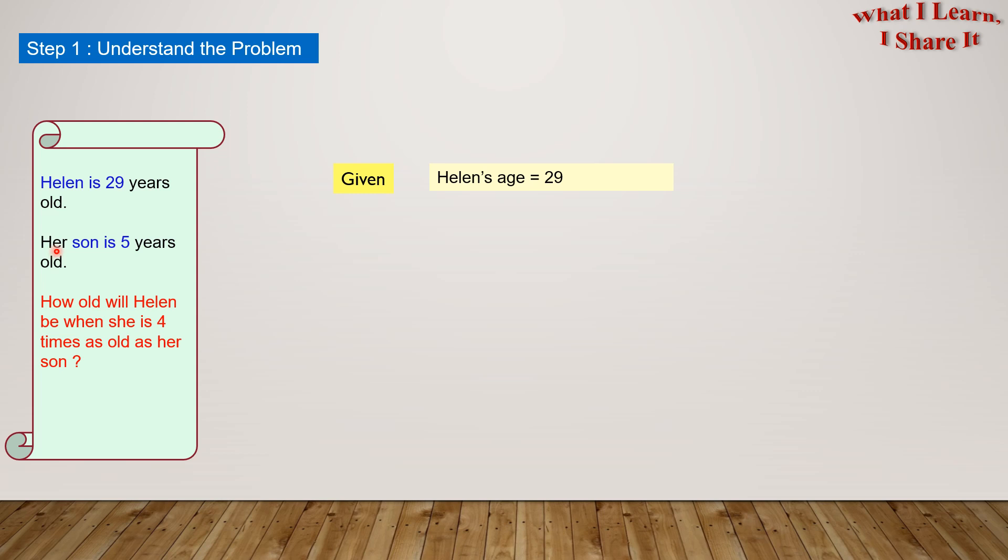We are also given that her son is 5 years old. So we could write in our own words that Helen's son's age equals 5.